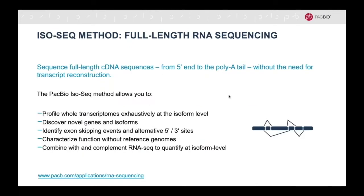The ISO-SEQ method allows you to profile a whole transcriptome exhaustively at the isoform level, discover novel genes and isoforms, identify exon skipping events in alternative start and end sites, characterize function without a reference genome, and combine with and complement RNA-seq data to quantify at the isoform level.